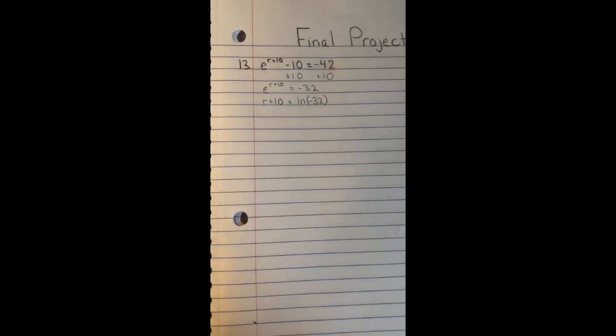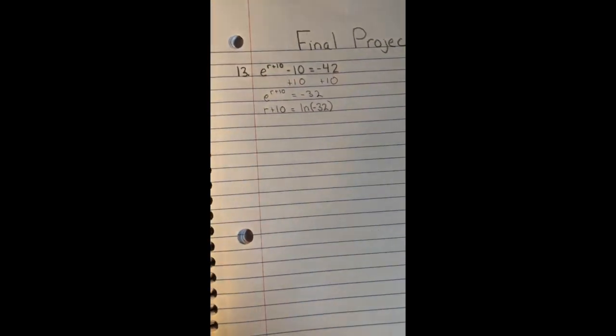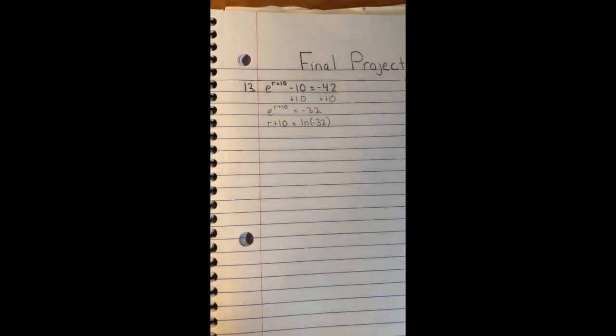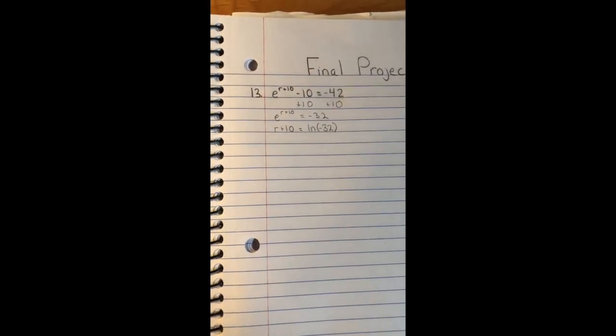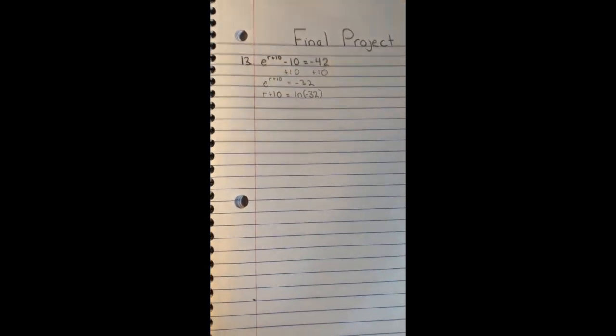And then we are taking the natural log of negative 32. At this point, we can't really go any further because you can't take the natural log of a negative number. It's undefined because natural log is defined only for values greater than zero. So that's it.